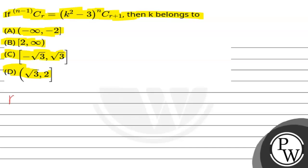The key concept is: we know that nCr is equal to n factorial upon (n minus r) factorial times r factorial, in the binomial expansion.